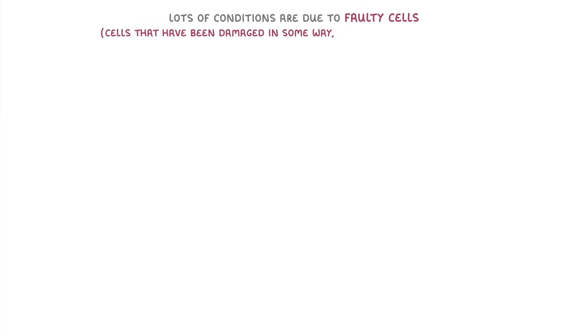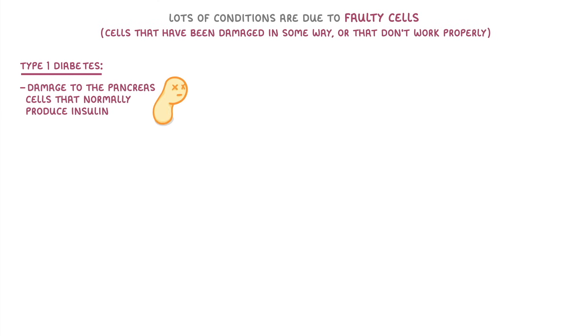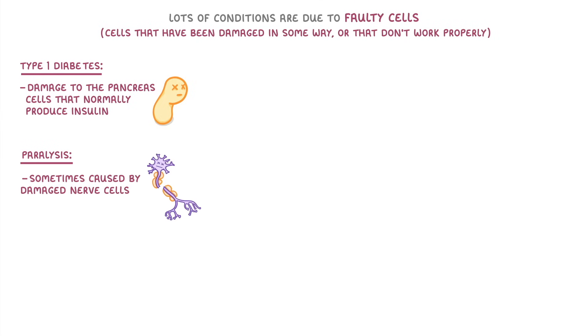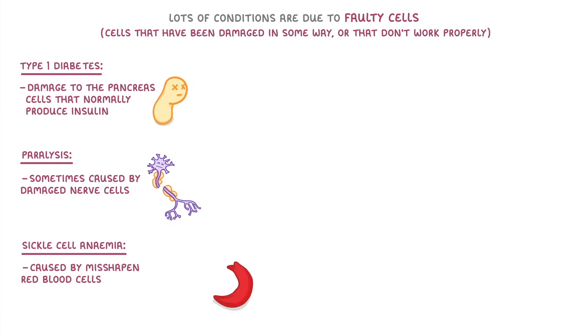The other background we need to know is that lots of conditions are due to faulty cells — cells that are damaged or don't work properly. For example, type 1 diabetes is caused by damage to the pancreas cells that normally produce insulin, while paralysis is sometimes caused by damaged nerve cells, and sickle cell anemia is caused by misshapen red blood cells.